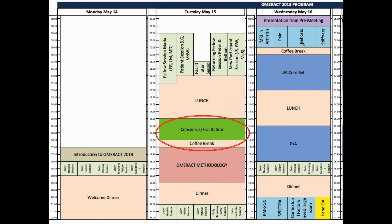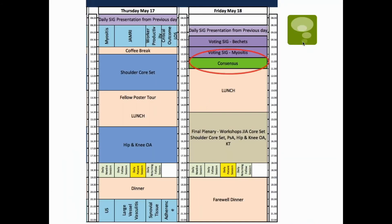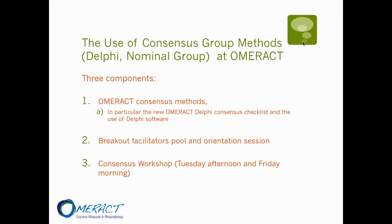There will be a one-and-a-half-hour consensus meeting on Tuesday at the start of the OMERACT conference, and a second session on Friday morning for a wrap-up and additional information about consensus. We are still working on the exact content of these two sessions. In addition, there will be specific training for a group of expert facilitators, who have been recruited through a nomination process. Working groups are therefore no longer responsible for organising their own facilitation of the breakouts, freeing them to actively participate.